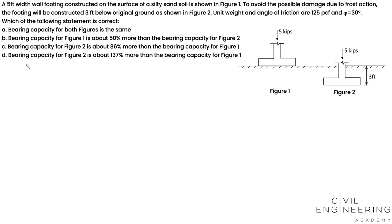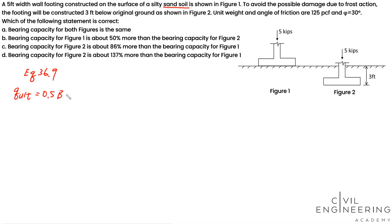The most common equation used to calculate bearing capacity is the Terzaghi bearing capacity equation. For a sand soil type, we use equation 36.9 from the reference manual, which gives the ultimate bearing capacity for sand soil. The equation is: 0.5 × B × γ × Nγ + pq + γ × Df × Nq.